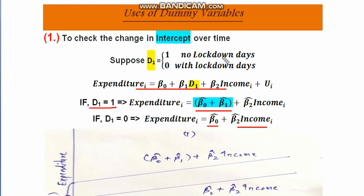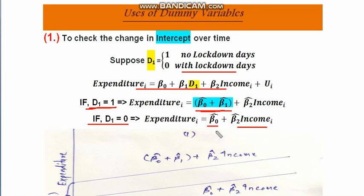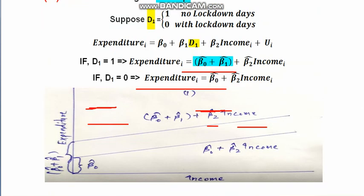Naturally, if there are no lockdown days, expenditure is expected to go up — represented by beta-naught-cap plus beta-1-cap. During lockdown days, D1 equals 0, so the additional expenditure beta-1-cap becomes zero. Our null hypothesis here is whether beta-naught-cap plus beta-1-cap equals beta-naught-cap, i.e., whether the two intercepts are significantly different.